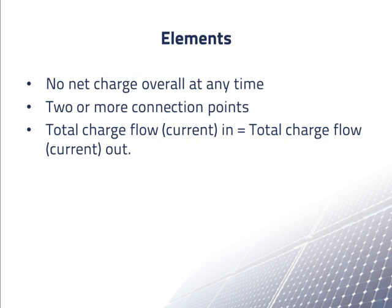Every element has two or more connection points and current flows into and out of the elements only through the connection points. The total current flowing in all contacts and the total current flowing out all contacts must balance. That is to say, charge flowing in one connection point must be balanced by charge flowing out another connection point.